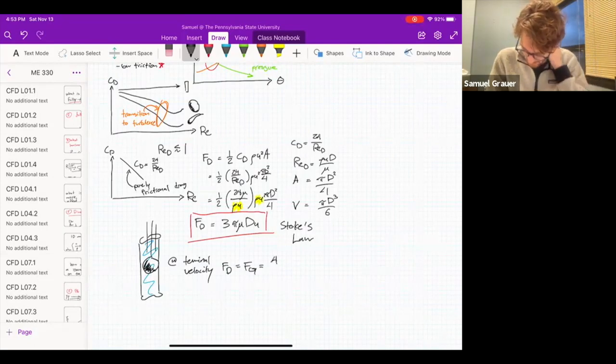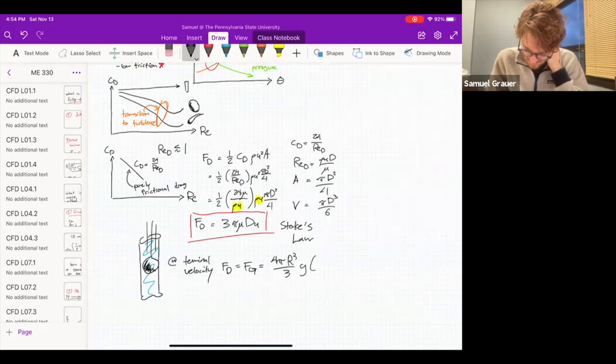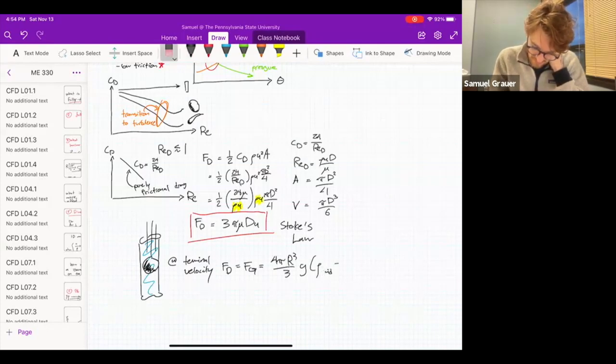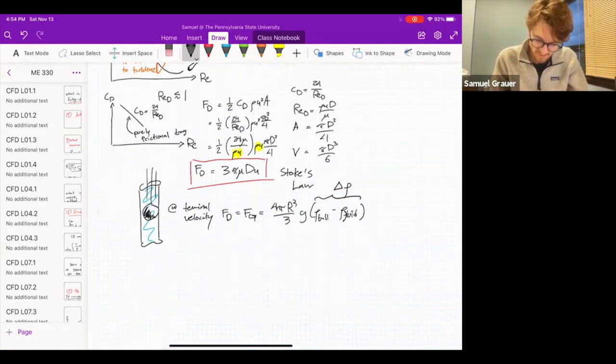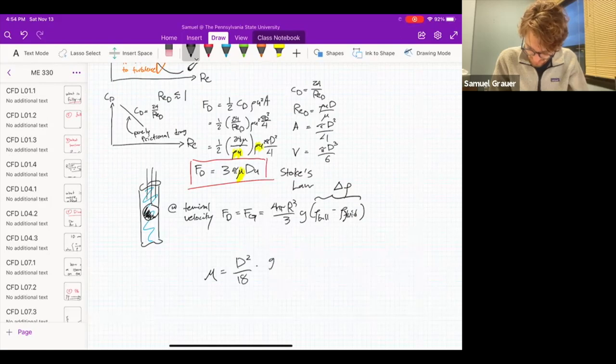Which is going to be equal to pi D cubed over six times the gravity constant times the density of the ball minus the density of the fluid. Rho ball minus rho fluid, which we can call this delta rho. And if you substitute everything in, what you can do is you can get an expression by combining these equations and you can solve for mu. So mu is going to be equal to D squared over 18 times G delta rho over U. Now, why is that interesting?